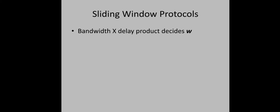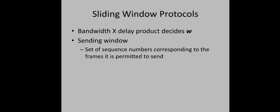The channel capacity can be measured using the bandwidth-delay product, and this product determines W. We have to efficiently use this channel while ensuring flow control. In sliding window protocol we have two terms: the sending window and the receiving window. The sending window is the set of sequence numbers corresponding to the frames the sender is permitted to send, and it contains two categories of frames.